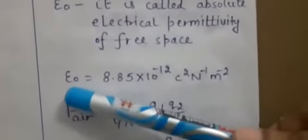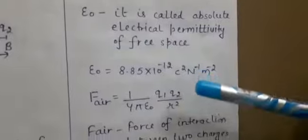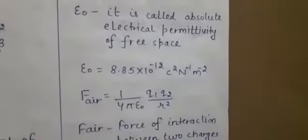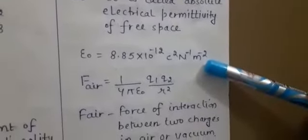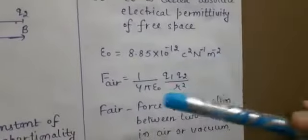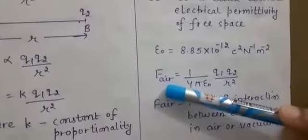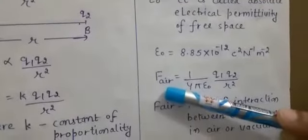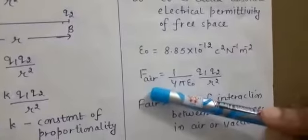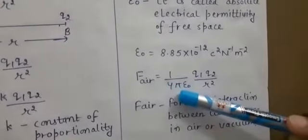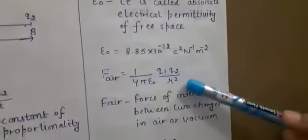Repeating: epsilon 0 has a fixed value and its unit is C² per Newton per metre square. This concept is also explained in the next part of this section. Now the force of interaction between charges in air uses the same formula, and you substitute K as 1 by 4 pi epsilon 0, giving F_air = (1/4πε₀) × Q1 Q2 / R square.